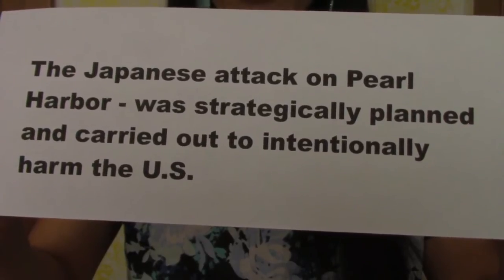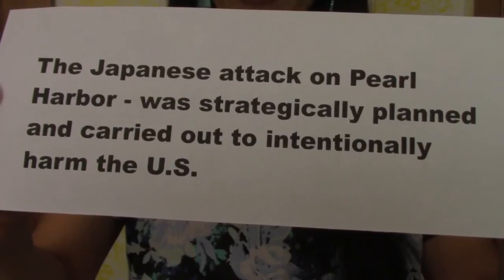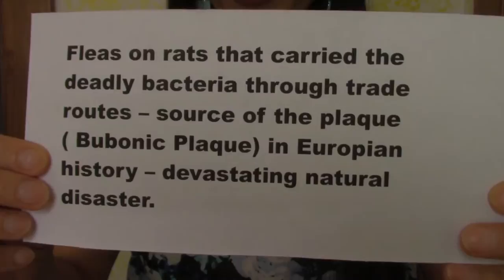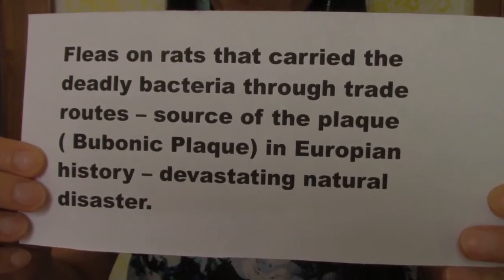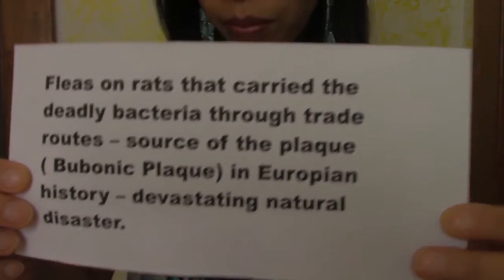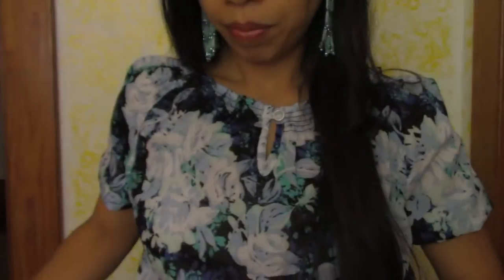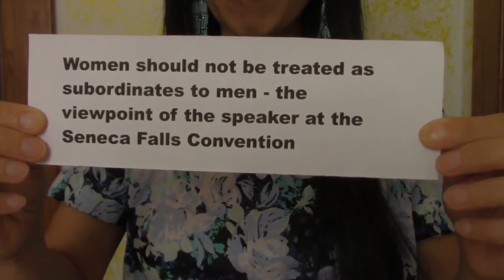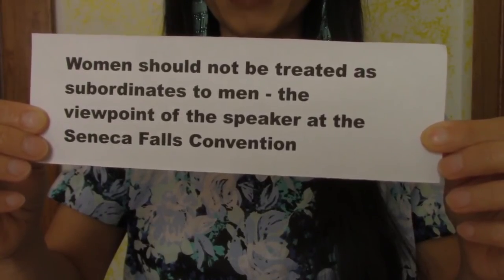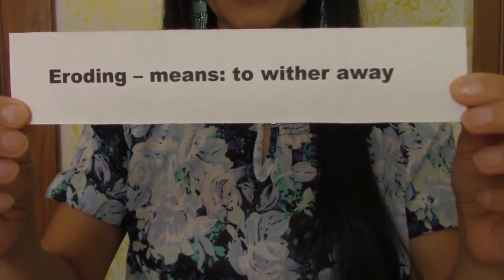The Japanese attack on Pearl Harbor was strategically planned and carried out to intentionally harm the US. Rats that carry deadly bacteria through trade routes were the source of the bubonic plague — the most devastating natural disaster in European history. Ratified means altered. Women should not be treated as subordinates to men — the viewpoint of the speaker at the Seneca Falls Convention. Eroding means to weather away.